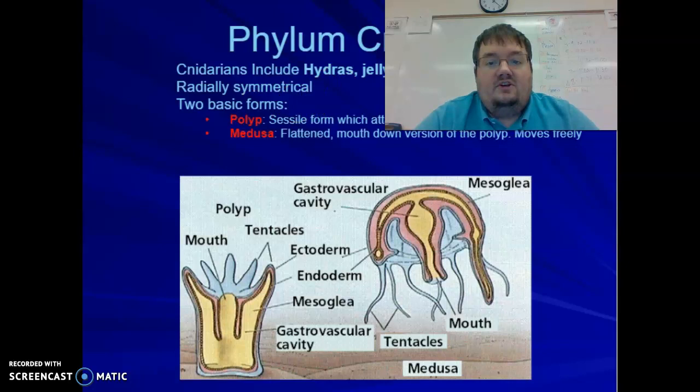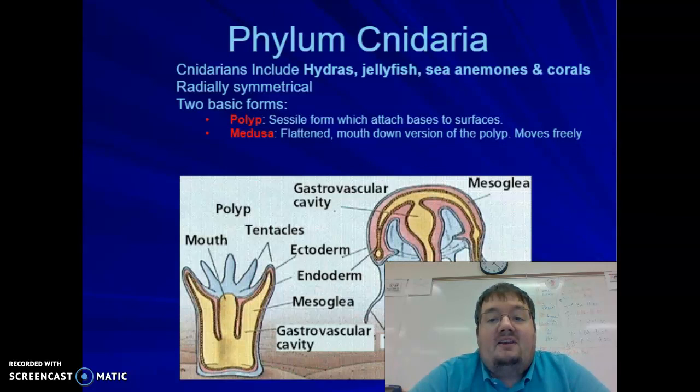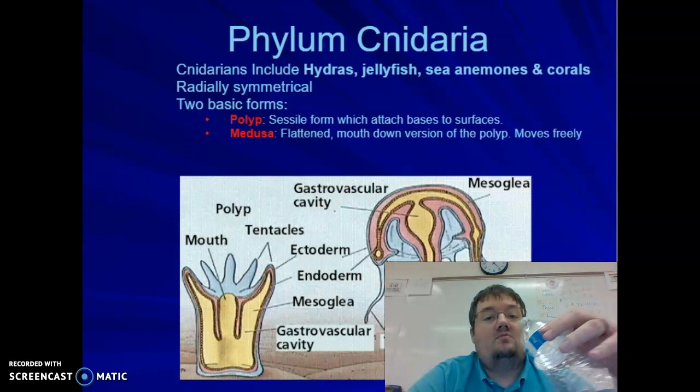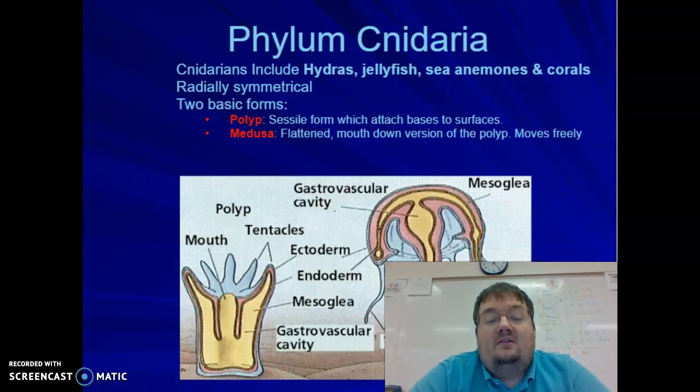Cnidaria include hydra, jellyfish, sea anemones, and coral — these are all animals. I've briefly mentioned hydra before, and you answered some questions about hydra in your protozoa lab, because that's the specimen we normally look at. As far as their symmetry goes, if you remember back from chapter 9, these are radially symmetrical. Radial means they can be divided two or more times, but not an infinite number of times, like spherical.